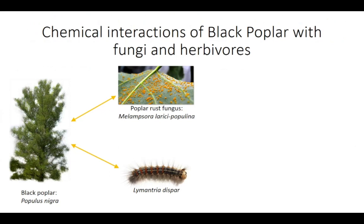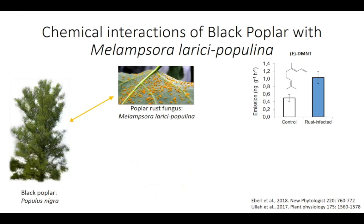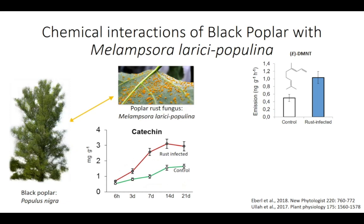The second experimental system we will be looking at today is the black poplar tree and its interactions with the poplar rust fungus and the gypsy moth. In contrast to the spruce bark beetle system, the chemical responses of the host differ somewhat depending on the attacking species. In response to fungal infection, the tree will emit moderate levels of volatiles — I am showing the homoterpene DMNT as an example, but the trend is similar for other sesquiterpenes and green leaf volatiles.